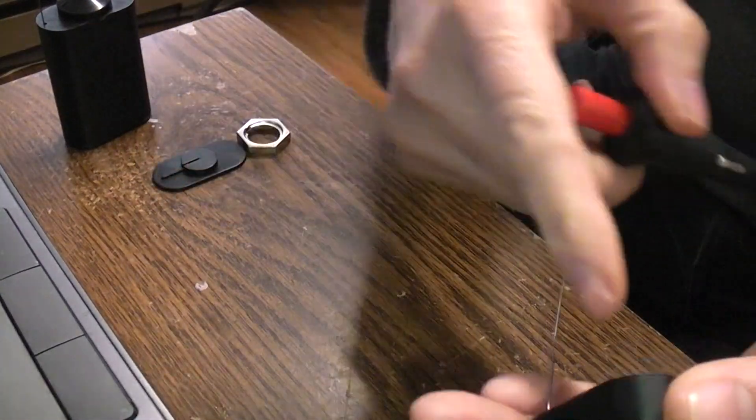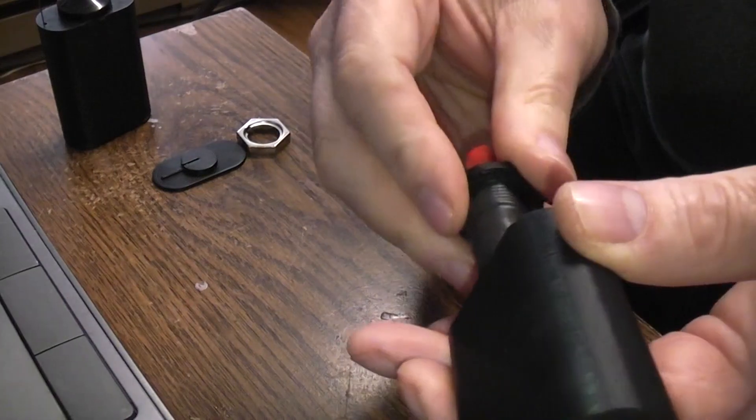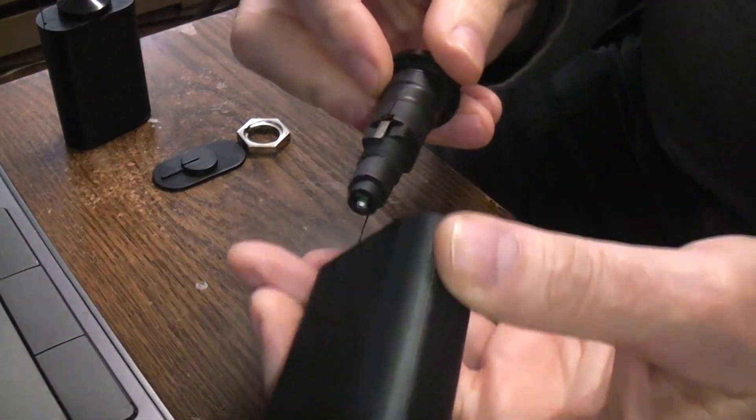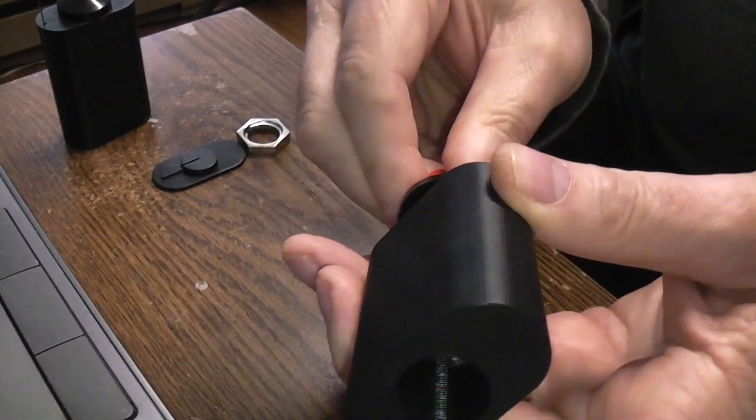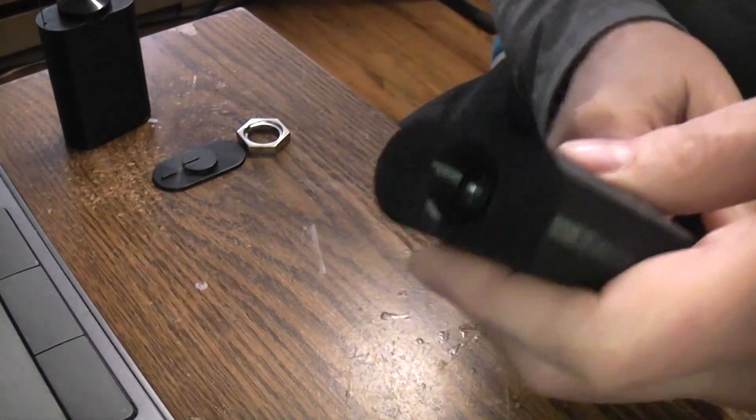So normally I put a little bit of glue inside the hole here. Turn this at about a 45-degree angle. Just shove it in. Let the glue set up.